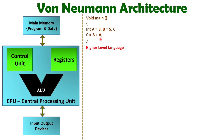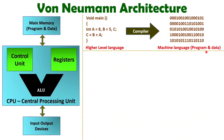When you want to execute any program, you will be executing instructions along with data which is stored in common memory. When the compiler compiles this program, it will generate binary data for both the program and data. So a program means a set of instructions, and along with that, data will also be there — both program and data are stored in common memory in Von Neumann architecture.